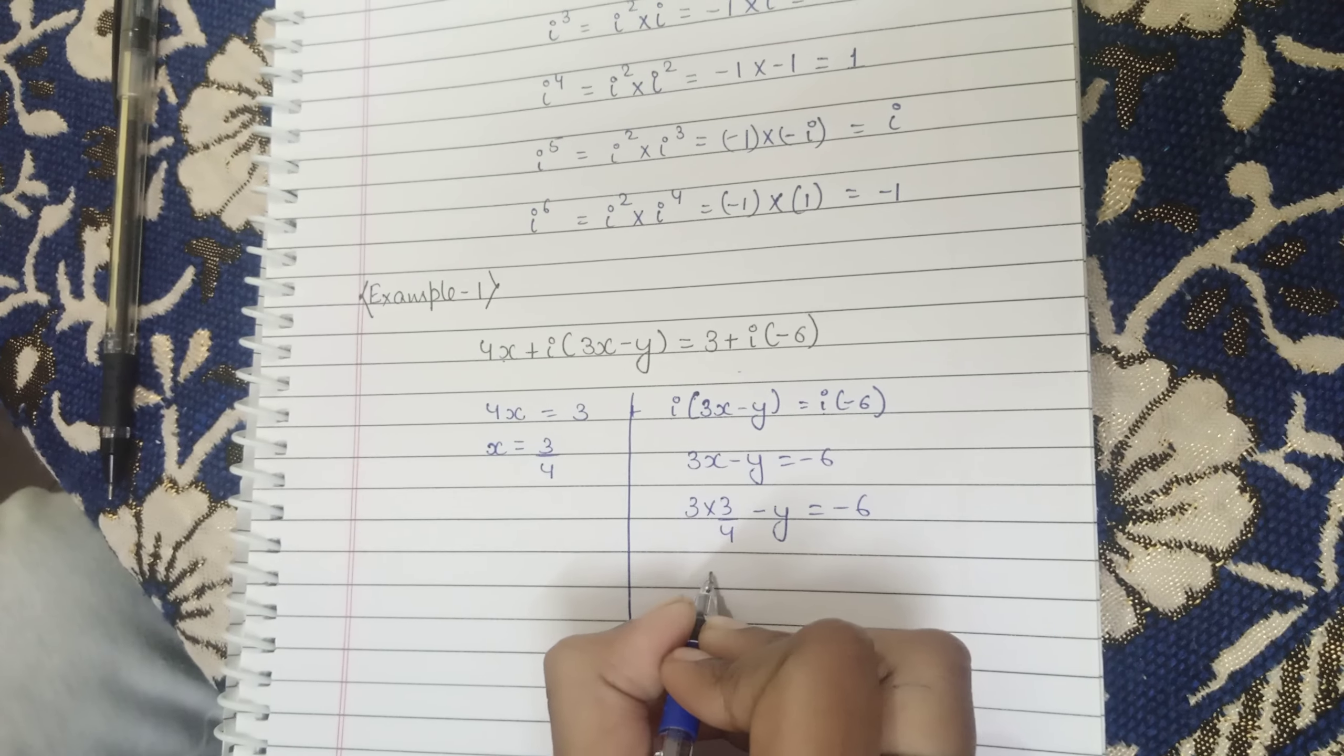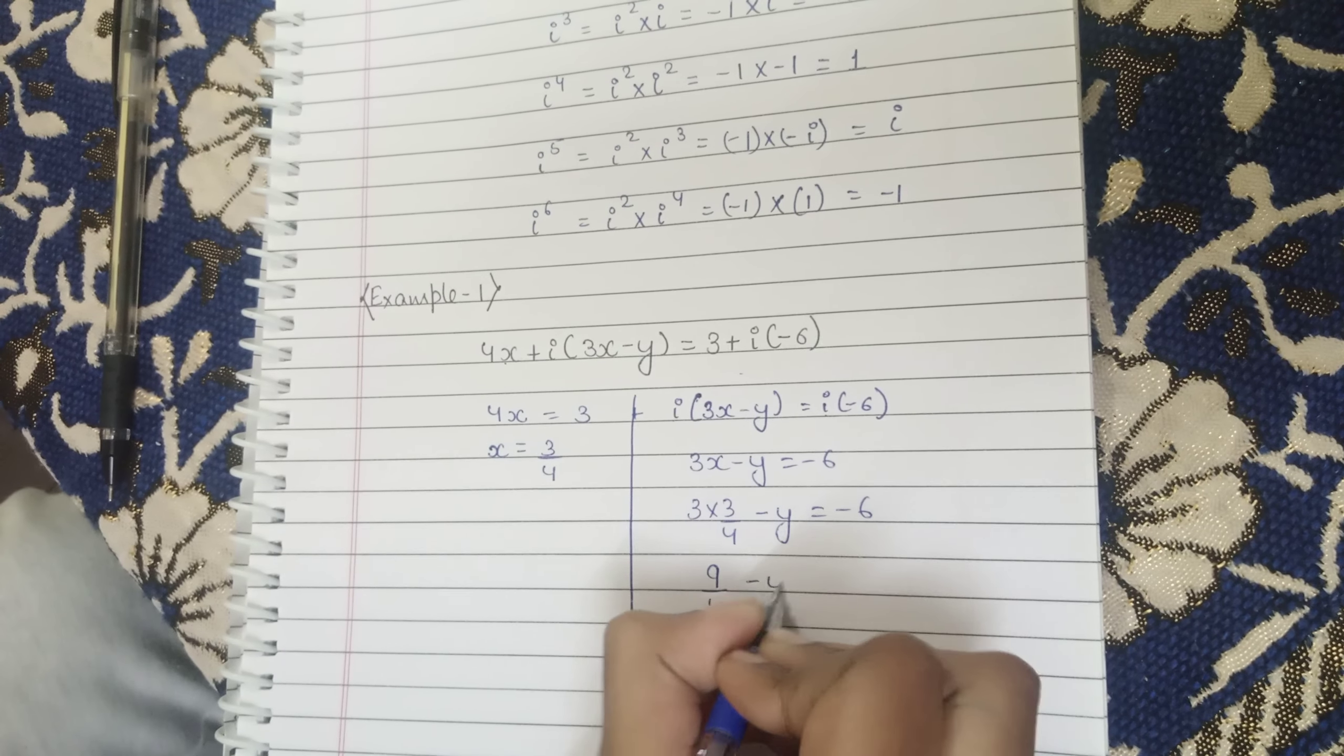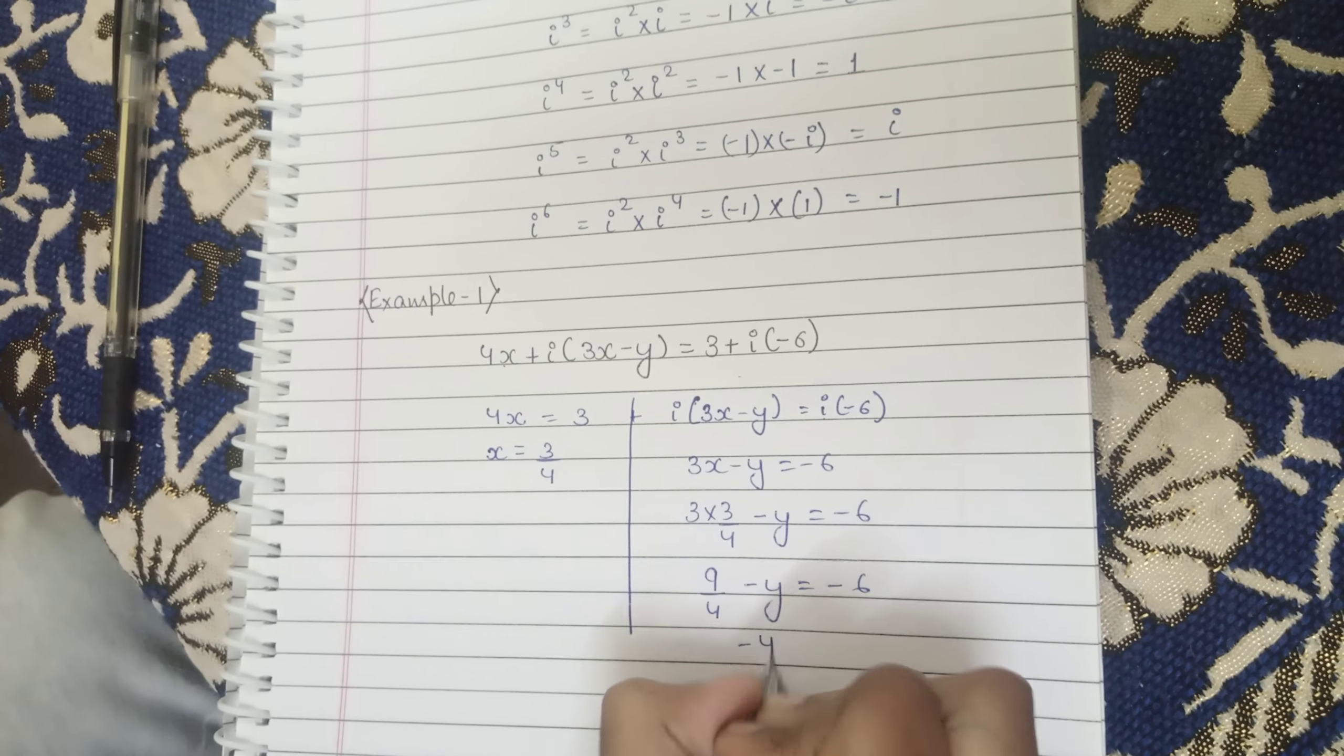So we multiply here 9 by 4 minus y equal to minus 6. Minus y value will be equal to that side, so minus 9 by 4 will be 4 minus 24 minus 9 into 4 minus y.